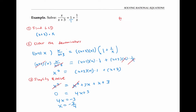Finally, I'm going to plug in my answer to check. This is a good idea for any kind of equation, but it's especially important for a rational equation. Because occasionally for rational equations, you'll get what's called extraneous solutions — solutions that don't actually work in your original equation because they make the denominator zero. In this example, I don't think we're going to get any extraneous solutions because negative three fourths is not going to make any of these denominators zero.